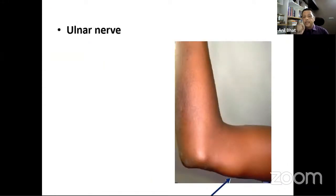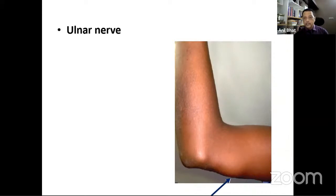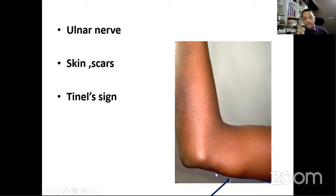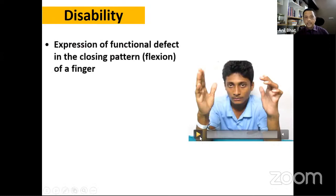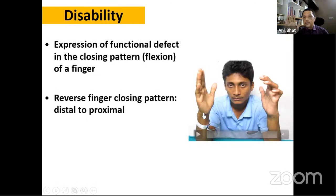During palpation, nerve palpation is most important. Check for tenderness and thickening of the nerve, especially at the cubital tunnel, and for subluxation of the nerve as the elbow is flexed and extended. In Hansen's neuritis, the nerve will be thickened, tender, and sometimes quite enlarged — there could even be an abscess inside the nerve. Check skin scars and Tinel's sign. When examining movement, the disability reflects a functional defect in the closing pattern of the hand.